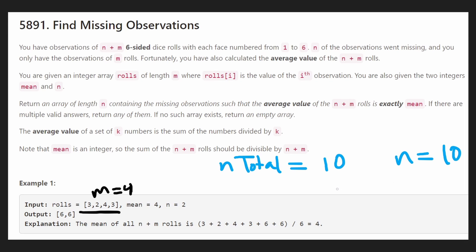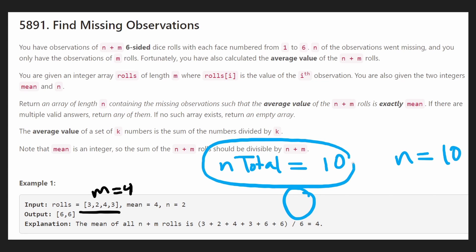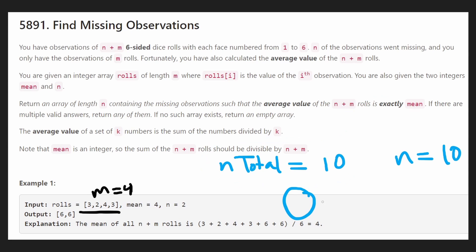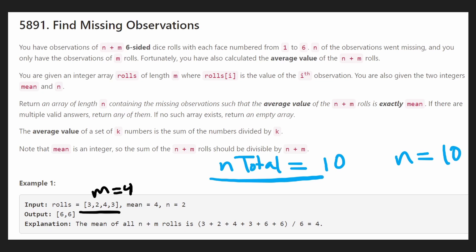Now let's finish up the problem by writing out the code. Since we are being greedy, the time complexity is pretty much the n total divided by 6 — basically linear in n total. And there's really no extra memory needed.